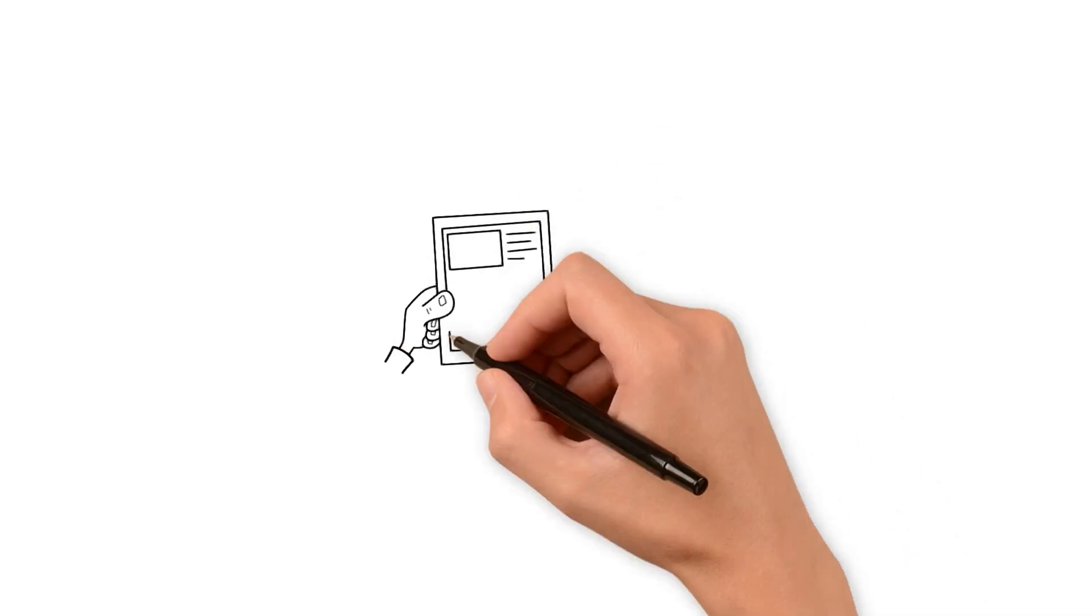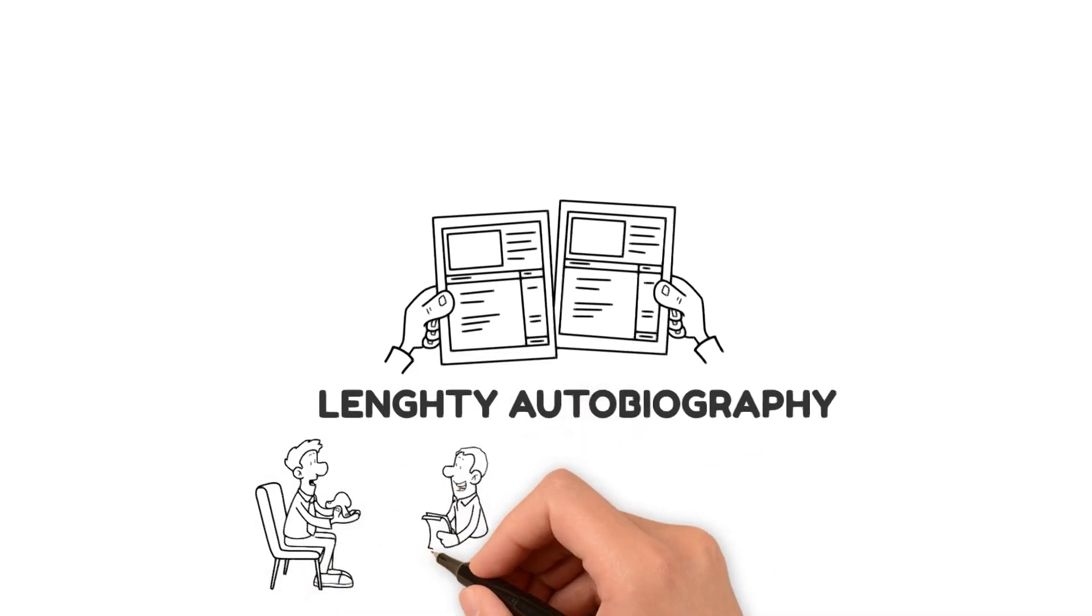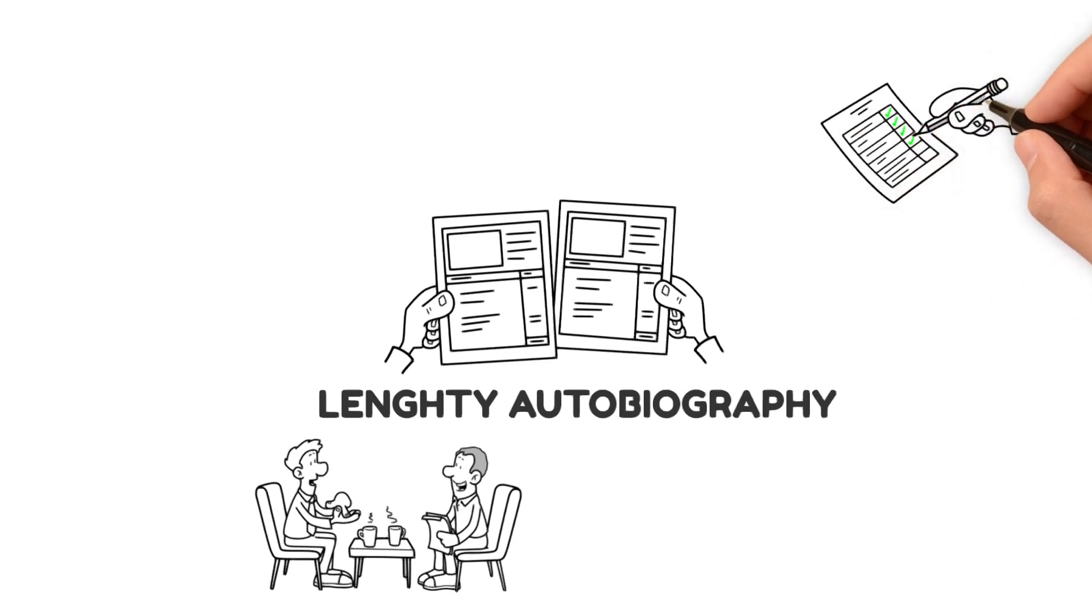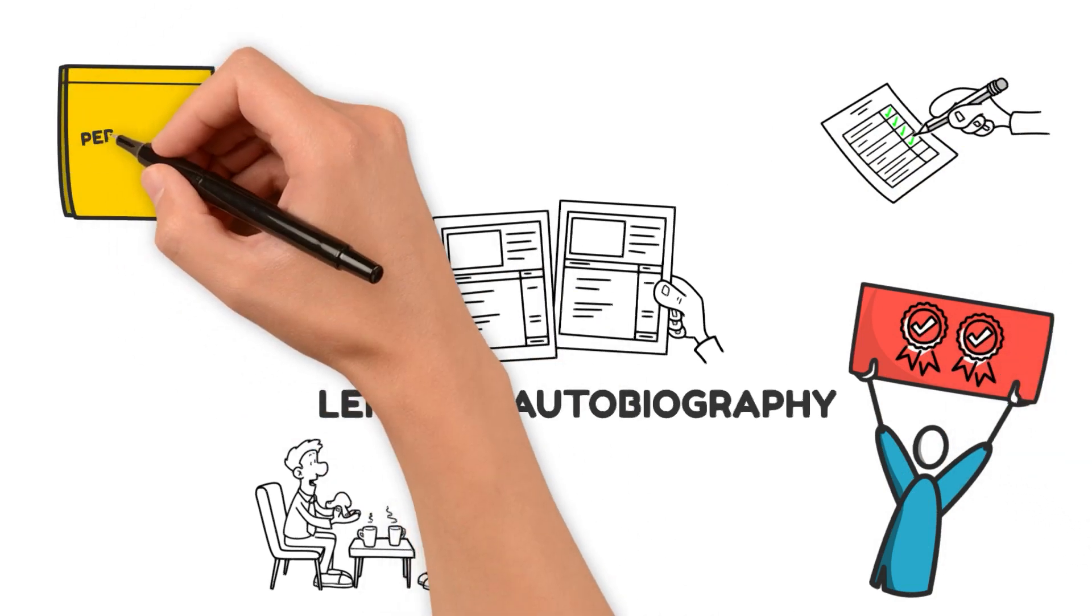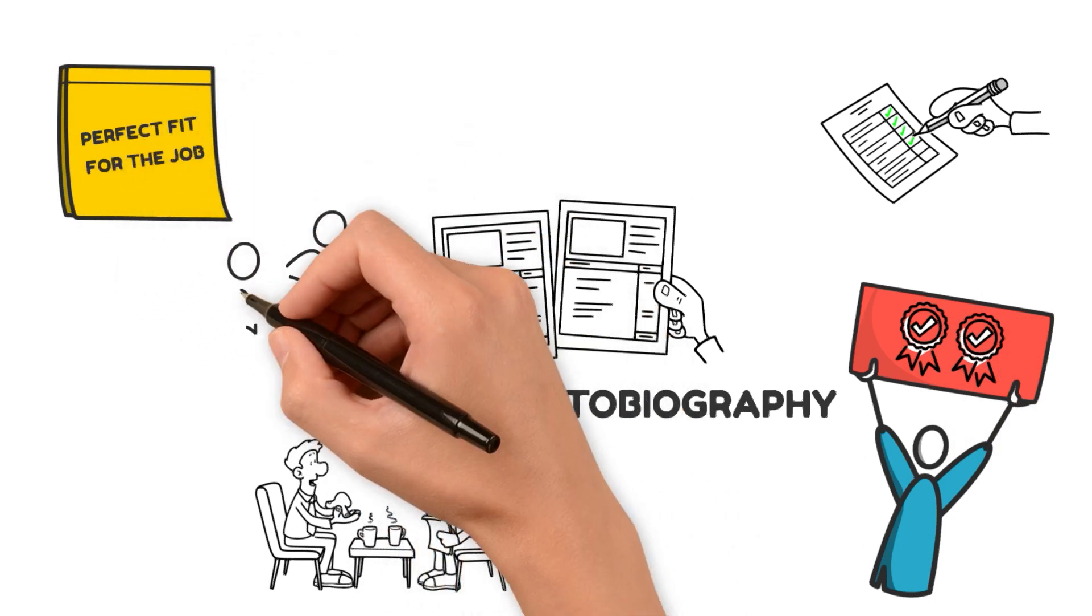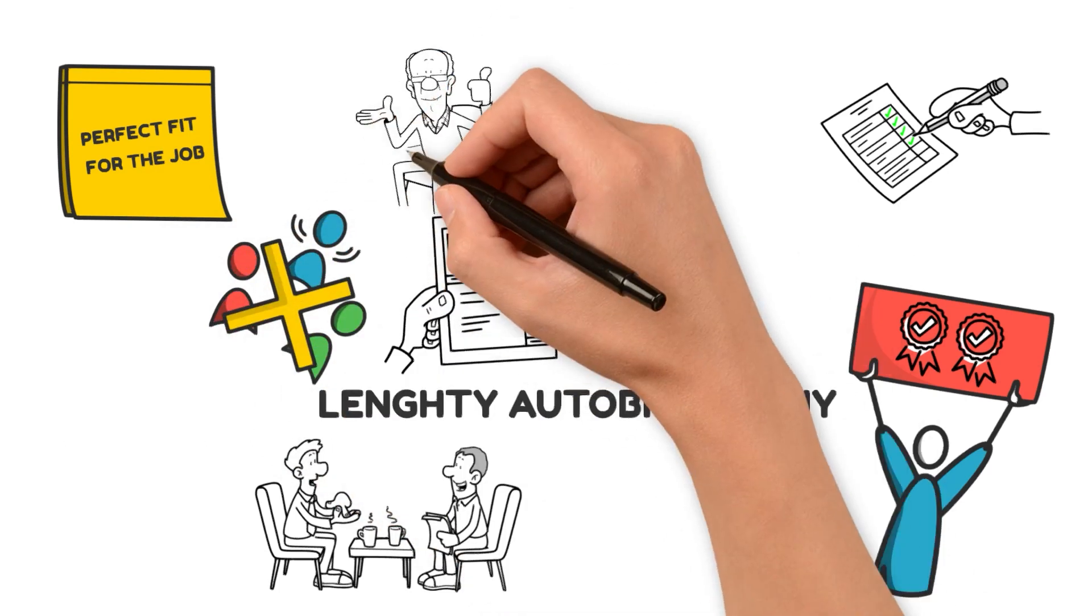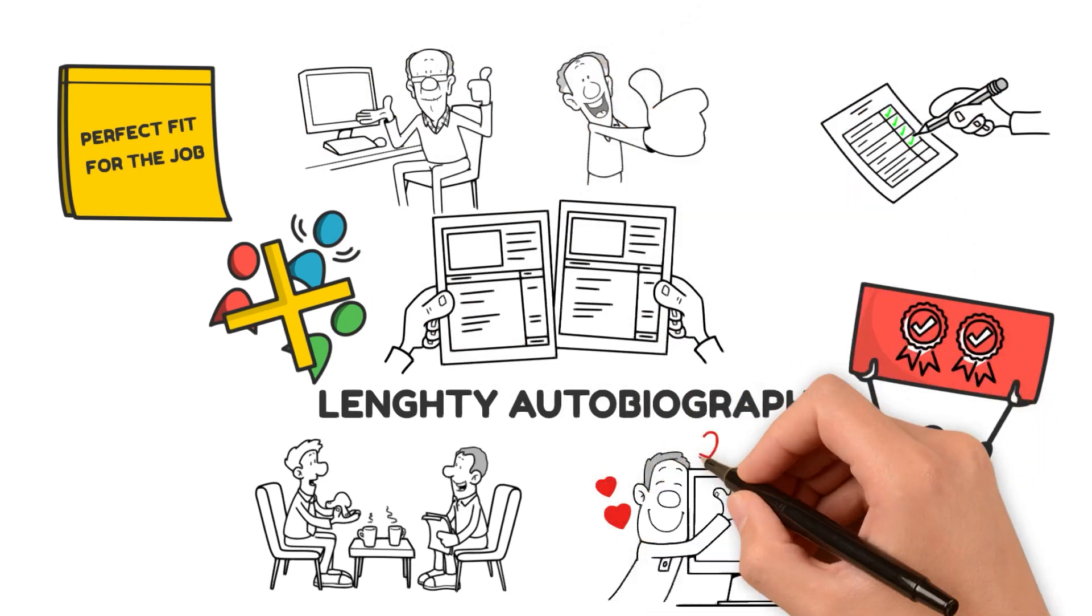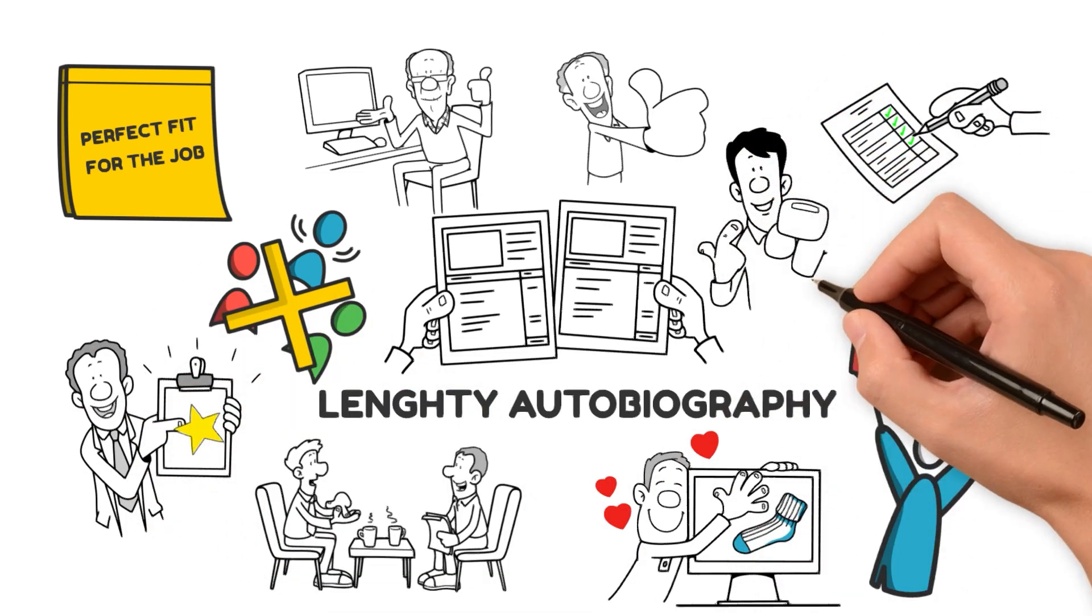To conclude this video, first and foremost, don't give a lengthy autobiography. The interviewer doesn't need to know every detail of your life story. Instead, focus on the highlights that are relevant to the job you're applying for. Highlight your professional experiences, skills, and achievements that directly relate to the position. Show them why you're the perfect fit for the job. Secondly, avoid sharing personal information that isn't relevant to the job. While it's great to show your personality, keep it professional. The interviewer doesn't need to know about your love for your impressive collection of vintage socks. Stick to the professional side of things and let your qualifications shine.